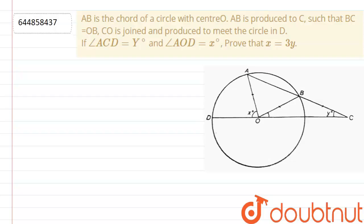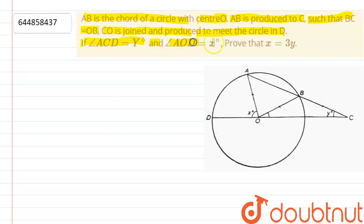Hello friends, here the question is: AB is the chord of a circle with center O. AB is produced to C such that BC is equal to OB. CO is joined and produced to meet the circle in D. If angle ACD is equal to Y degrees and angle AOD is equal to X degrees, then prove that X is equal to 3Y.